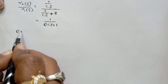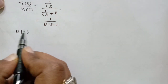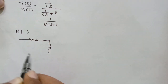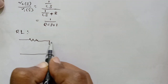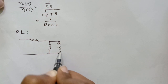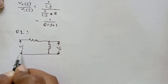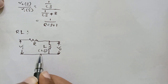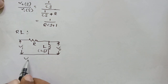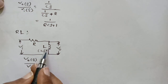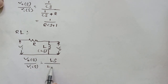Similarly, I'll be writing the transfer function for the RL network. I'm having R here and L here. Taking the voltage across the inductor — this is Va, this is R, this is L. In the s-domain we write Ls for the inductor. So V-naught(s) by Vi(s) equals the shunt element Ls divided by (Ls + R). This is the transfer function for the RL network.